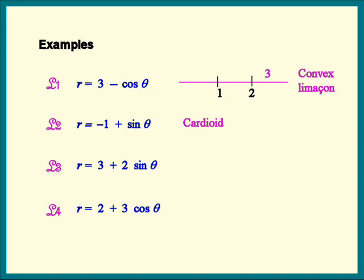Okay, how about the third one? L3. B is 2. 2B is 4. And A is 3 again. So 3 falls right between 2 and 4. That means this equation represents a dimpled limaçon.